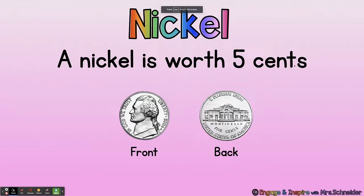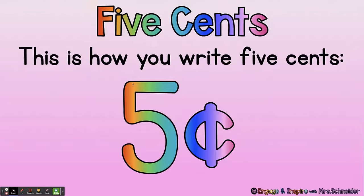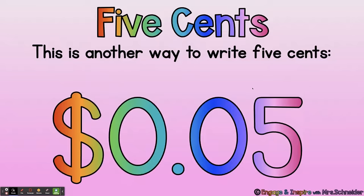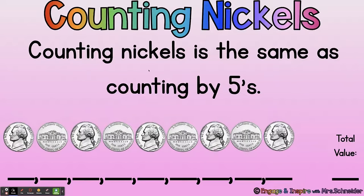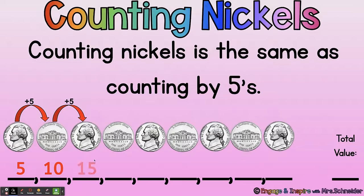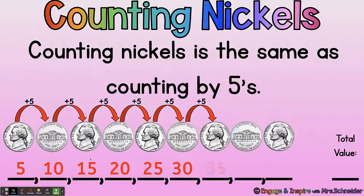A nickel is worth five cents. This is how you write five cents: draw a five and then a C with a line through it — that says five cents. Another way to write five cents: zero dollars, decimal point, zero five — five cents. Counting nickels is the same as counting by fives: five, ten, fifteen, twenty, twenty-five, thirty, thirty-five, forty, forty-five. So these nickels have a total value of 45 cents.